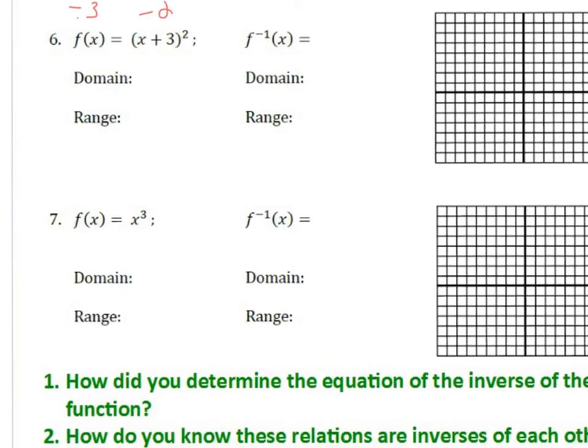Okay, for number 6, we start with x, we go to x plus 3, and then we squared it. So to go backwards, we're going to square root x, and then minus 3. So your inverse is the square root of x, subtract 3.